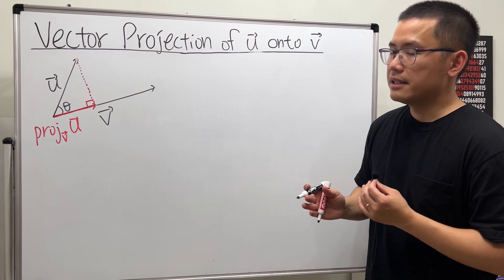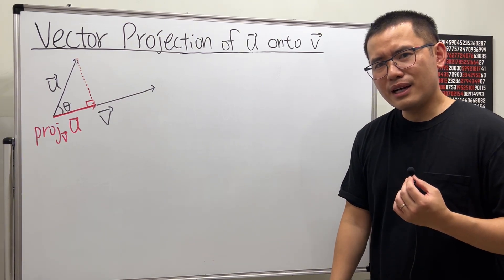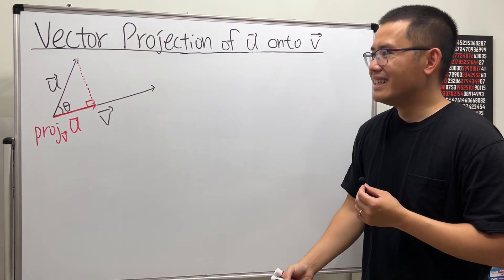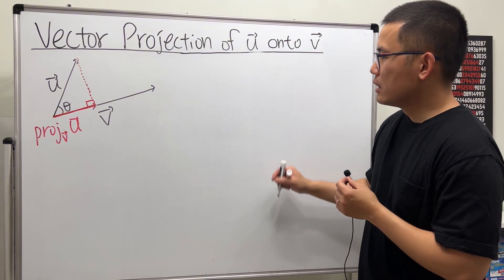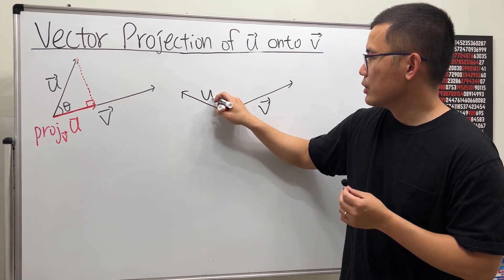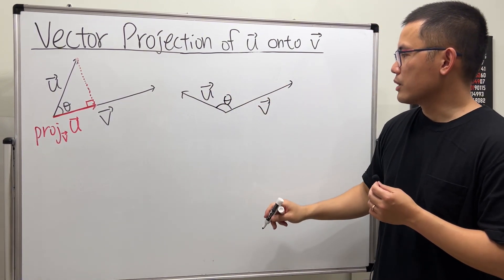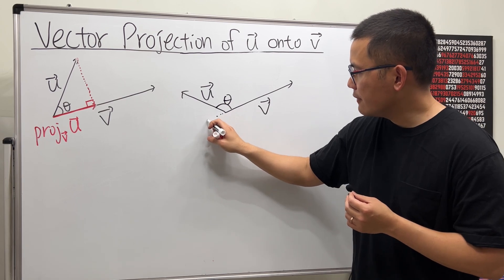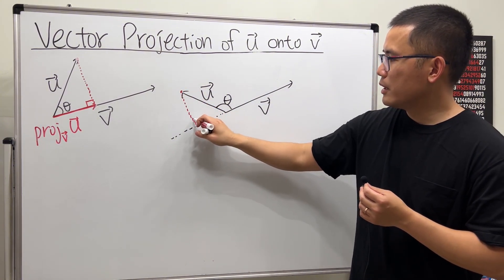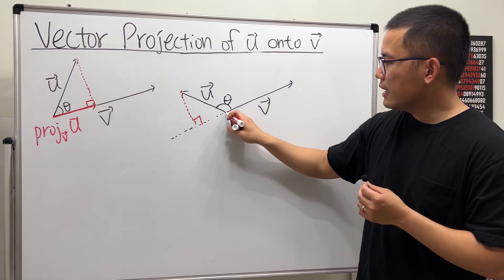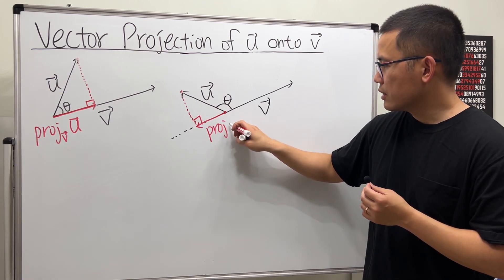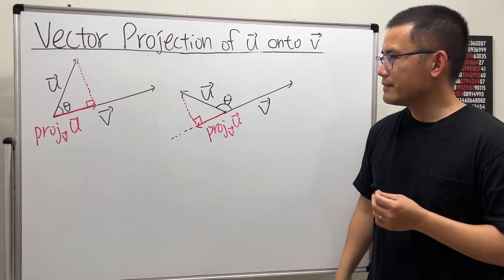That's when the angle theta is acute. If the angle theta is 90 degrees, the projection is just zero, because u is already perpendicular to v. The other case is when the angle is obtuse. Let's say here is v, and let's say now this is u. In this case, with the angle being obtuse, we will first have to extend v right here, and then do the same thing — go to the end of u and drop a perpendicular. Make sure this is 90 degrees. The projection is going from here to here, in the opposite direction.